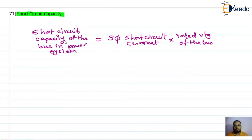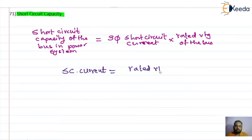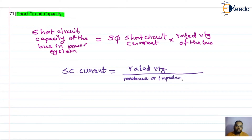We consider the per unit system in power system calculations. With that, the short circuit current can be written as rated voltage divided by reactance or impedance at short circuit. So the short circuit current in terms of per unit value is calculated as rated voltage divided by impedance at short circuit.